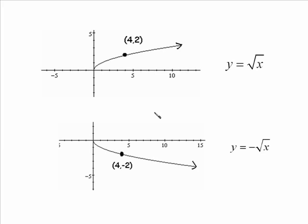And a very important concept that I'm going to reinforce as we go through this, if you take a look at the point four comma two, and any point on that original curve, y equals square root x, on the reflected graph, the mirror image of it, that point transformed to four comma negative two. So in other words, the y coordinate got multiplied by negative one. So two became negative two.